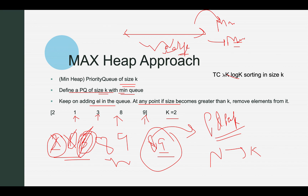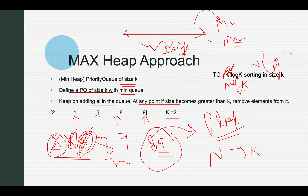To clarify, the complexity is n times log k — not k log k as I mistakenly wrote. You are iterating over all elements of the input array and maintaining a min heap of size k, so it is O(n log k).